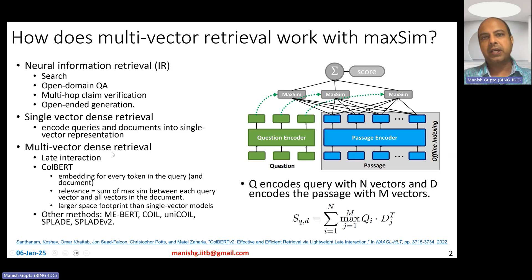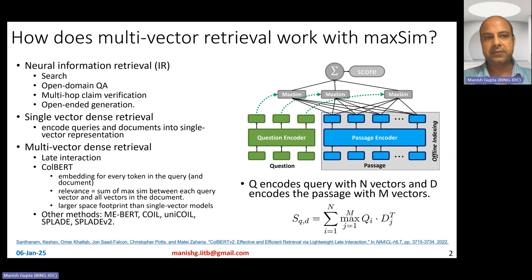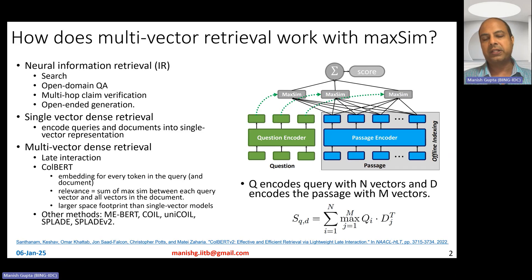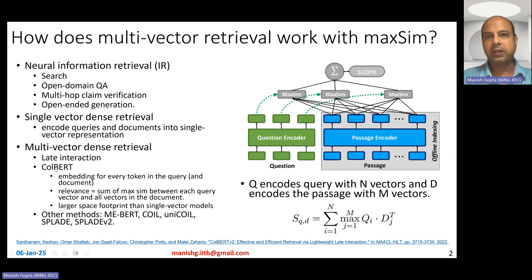More recently, people have started looking at multi-vector dense retrieval to improve on the quality of single vector methods. These single vector and multi-vector dense retrieval methods are all called late interaction methods because the queries and documents are encoded separately and then cosine similarity is computed at the end. Some of these multi-vector dense retrieval methods include ColBERT, ME-BERT, UniCOIL, SPLADE, and SPLADE V2.